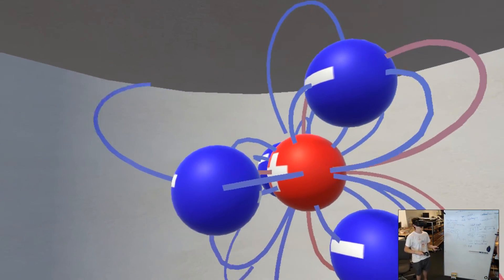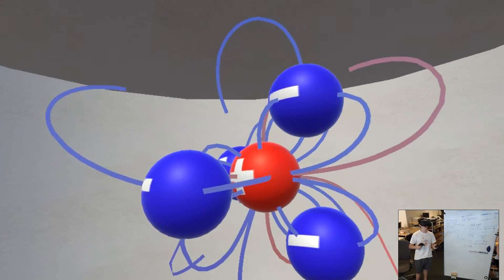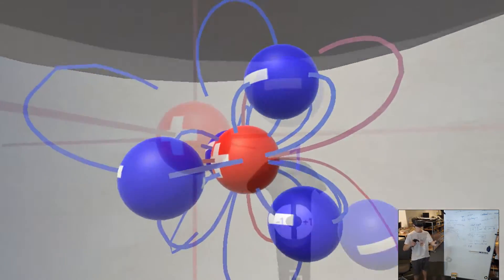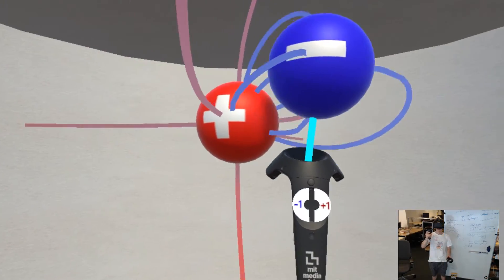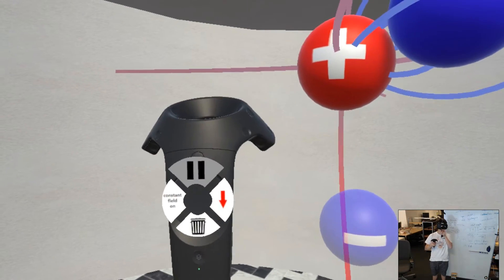Charges form stable configurations that correspond to molecular geometries. You can pause the simulation and make changes or look at it from a different angle.